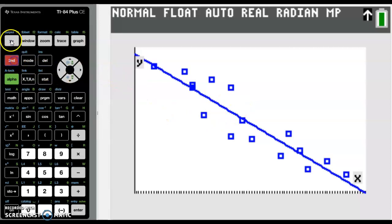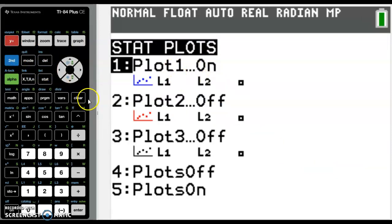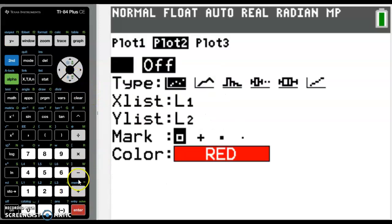So to do that, we go into stat plot. And we have the first one on. So we're going to go down to number 2. I'm going to turn this one on.